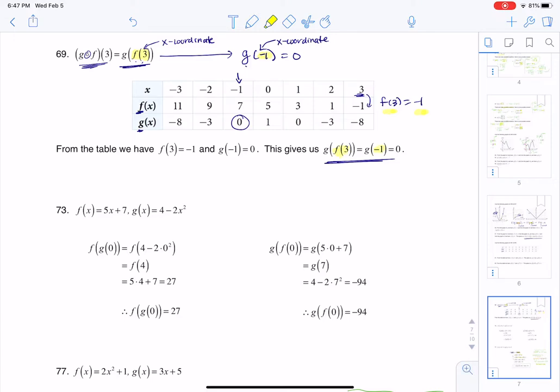And that's how I'm getting this string here. So again, f of 3 became negative 1, and then we look at G of negative 1 is actually 0. So that's how you handle those kind of table problems with the composition of functions.